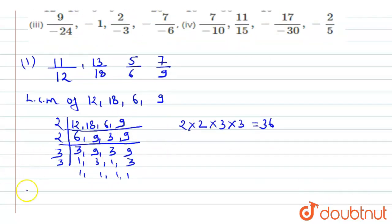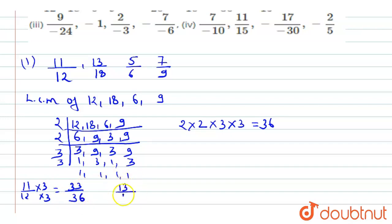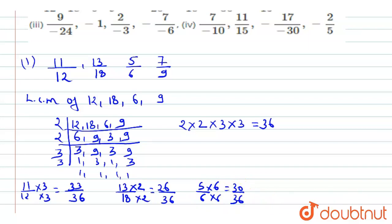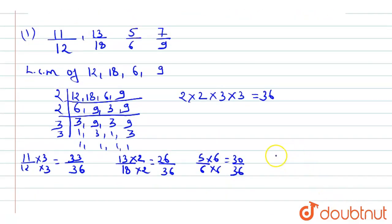Now we make all denominators equal to 36. For 11/12, multiply by 3 to get 33/36. For 13/18, multiply by 2 to get 26/36. For 5/6, multiply by 6 to get 30/36. For 7/9, multiply by 4 to get 28/36.